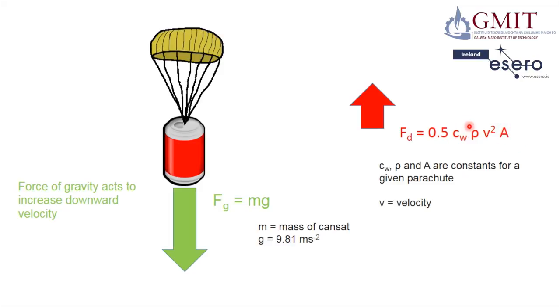Cw, ρ and A, and they depend on the shape and size of the parachute. The other thing that influences the size of the upward force is the velocity of the CAN.